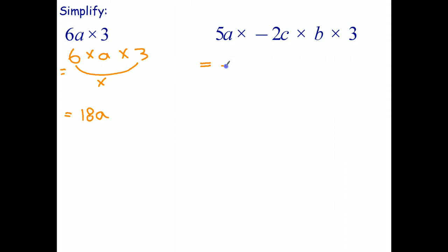And that gives me, for a coefficient, negative 30. You might even want to cross out the factors you've already multiplied if you want to. What I have left is a times c times b. The convention is we write these alphabetically. So it's a, b, c.